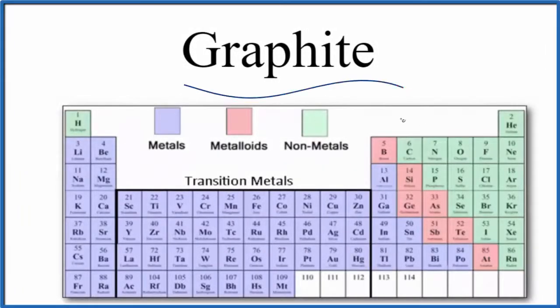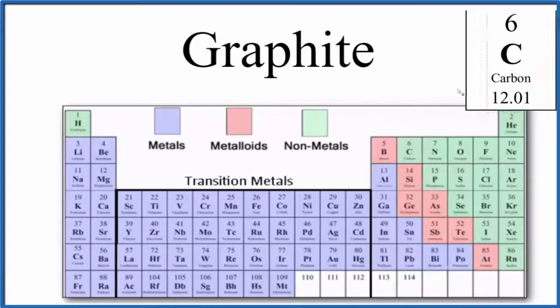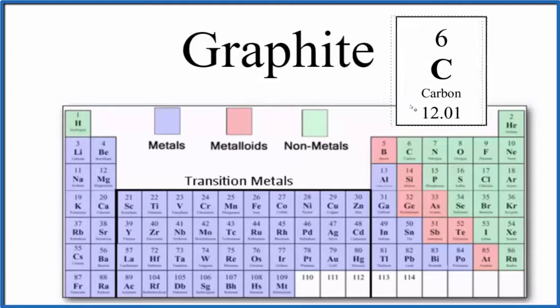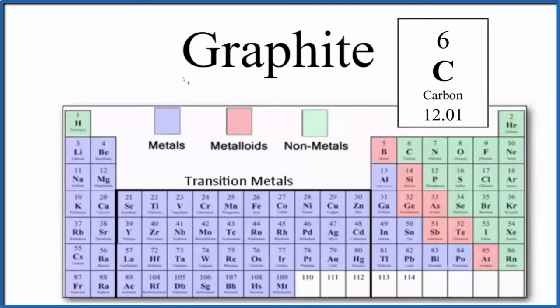The question is whether graphite is a metal or a nonmetal. The thing to understand about graphite is that it's made up of only carbon atoms. If we look at the periodic table divided into metals, metalloids, and nonmetals, we can see that carbon is a nonmetal.